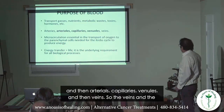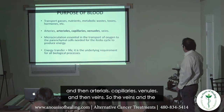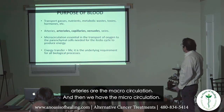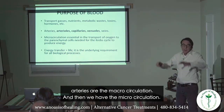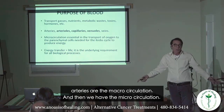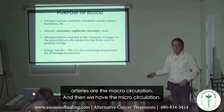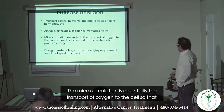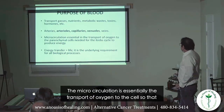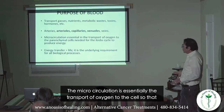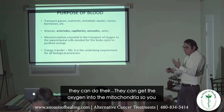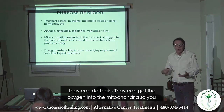The vascular system consists of arteries, then arterioles, capillaries, venules, and then veins. The veins and arteries are the macrocirculation, and then we have the microcirculation. The microcirculation is essential for the transport of oxygen to the cells.